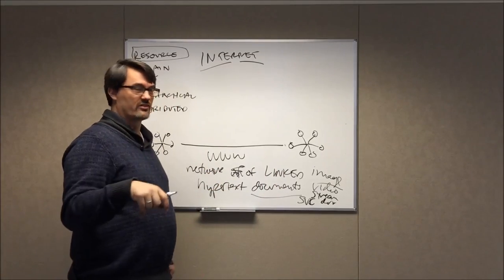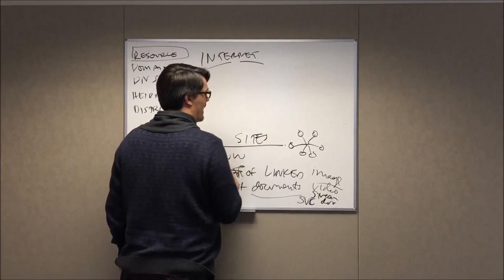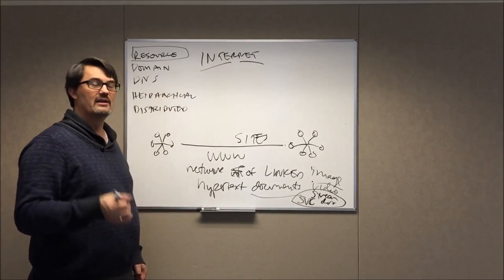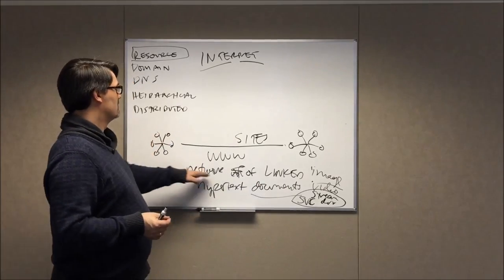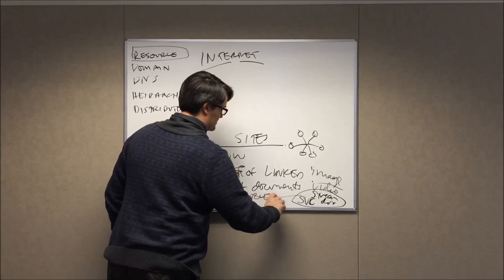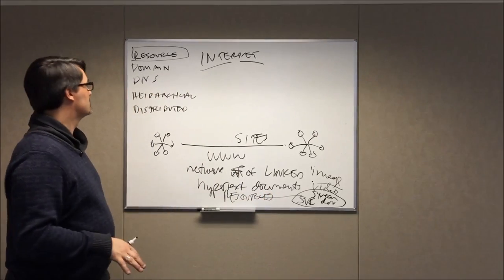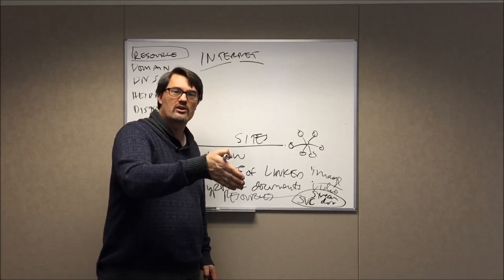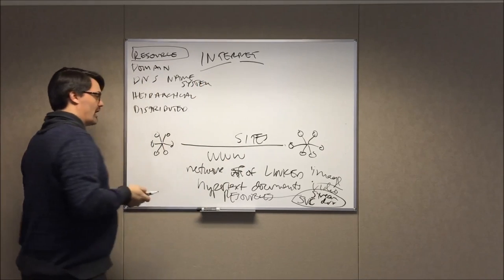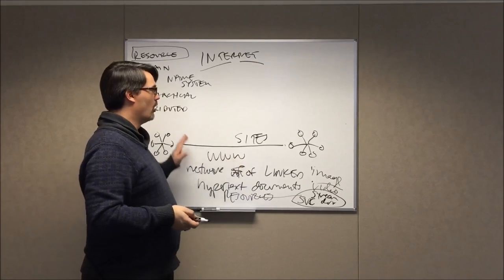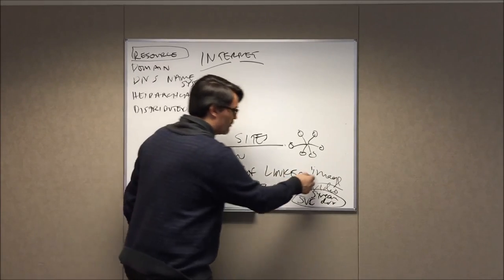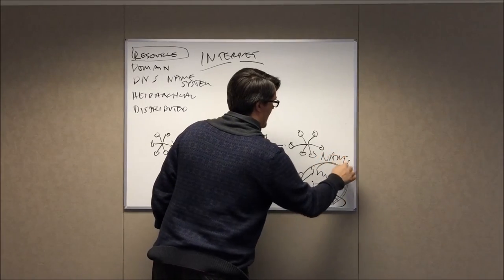A resource is anything you can identify, find, and use on the internet — a very broad term. The most common resource we think of is websites, but a resource is also a video, an image, or a streaming service. These are all things that can be specifically named and found on this interconnected network. Every resource must have a unique name.